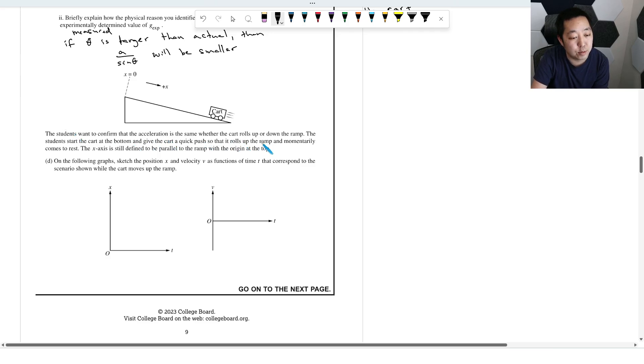Students want to confirm that the acceleration is the same, whether the car will up or down the ramp. The students start the cart at the bottom, give it a quick push. So it rolls up the ramp and momentarily comes to rest. The X axis is still defined to be parallel to the ramp of the origin at the top on the falling graph sketch, the position and velocity as a function of time that corresponds to the scenario while the cart moves up the ramp. So his position is going to be like over here. And if he's subject to acceleration, the position is going to be quadratic. And so he's going to be momentarily comes to rest, but not necessarily at the very top. So at some point it'll like come to a rest and then his position will then go more positive. So I would make it a parabola that looks kind of like this maybe. And then the velocity is going to be the slopes of this guy. Now, why is it a parabola? It's because it's kind of like the relationship, it's like one half AT squared. It's quadratic. And so you're going to start at some position and then you're going to move down. This is where you would be at the very top and then come back down.